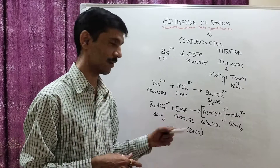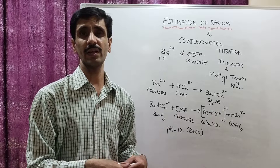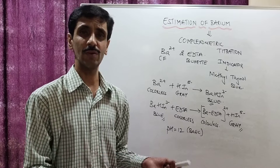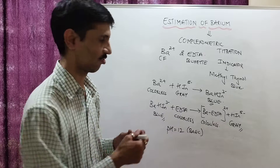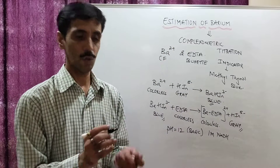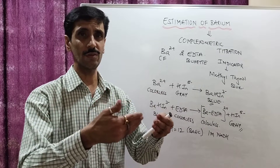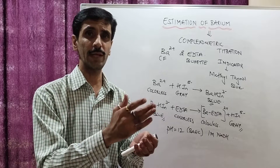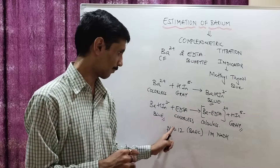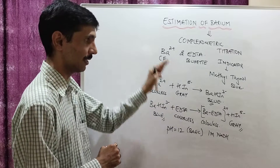pH 12 is required to ensure the complex is stable and we get a constant reading. Normally, when we use a buffer solution of ammonia and ammonium chloride, the pH is around 10 — we cannot use that because we want pH 12. So what we do is use 1 molar NaOH. Since NaOH is a strong base at 1 molar concentration, we can achieve pH 12 during the course of the titration.